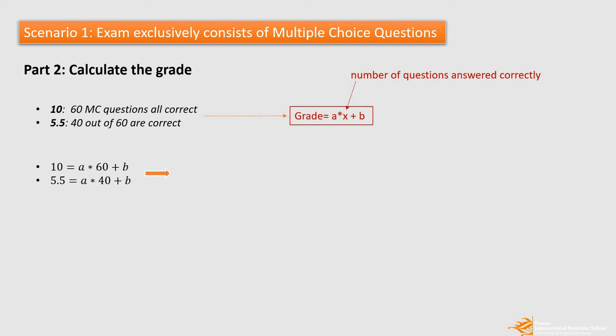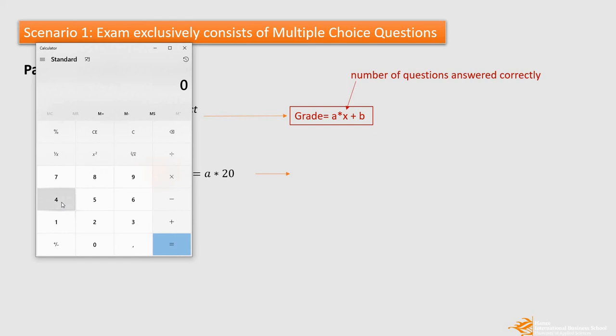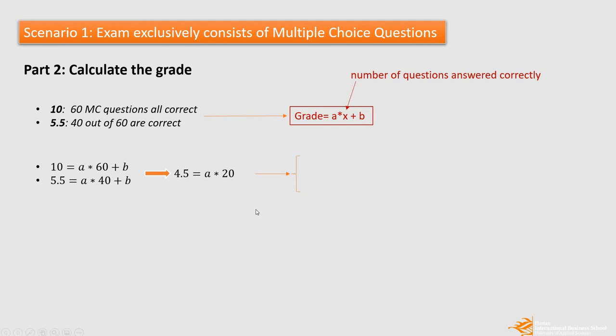If we combine these two equations, we get 4.5 equals to 20 multiplied by A. And then it's easy for us to get the number A. So I will use 4.5 divided by 20, and A is 0.225. So my A is 0.225. I use the A to replace any A in these equations, and then I get B is minus 3.5. So the equation for me to calculate the grade for this exam is X multiplied by 0.225 minus 3.5.